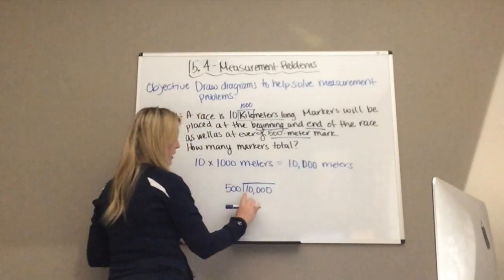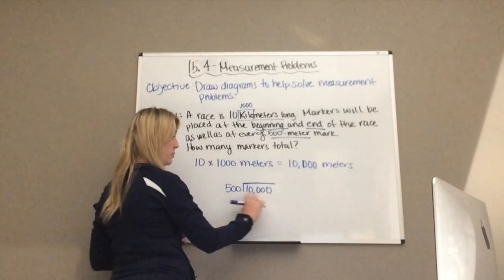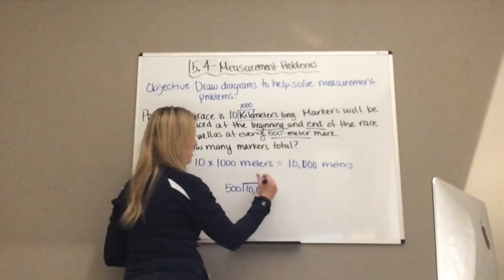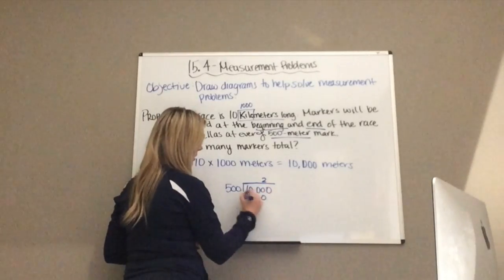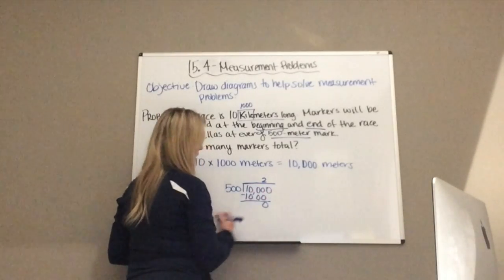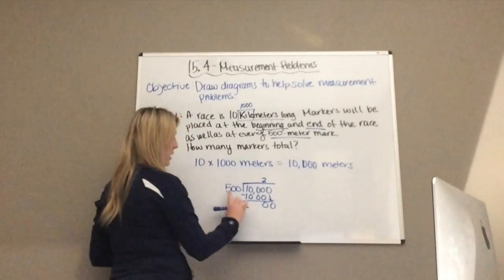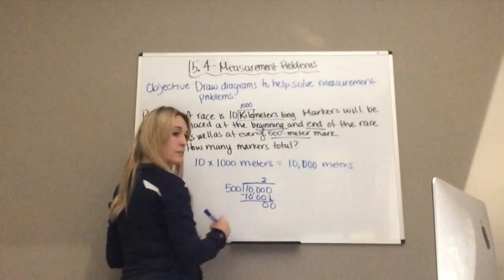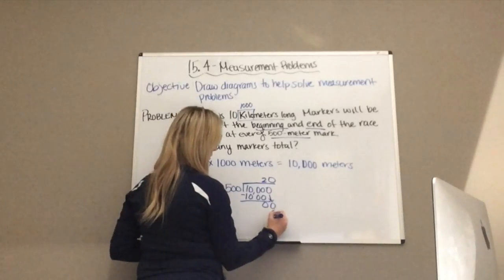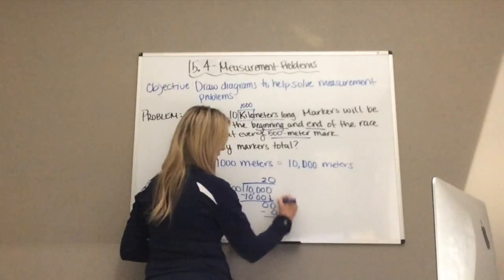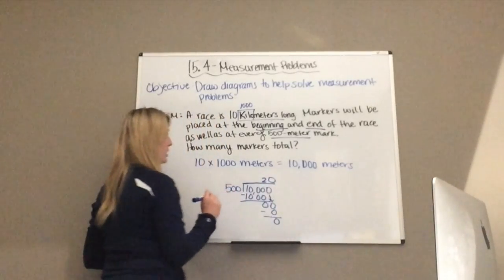Well, 5 does not fit into 1, or 10, or 100, but it does fit into 1,000. 500 fits into 1,000 two times. I subtract and I get zero. I bring down the second zero. How many times does 500 fit into double zero? Zero times. I subtract. I have nothing else to bring down and no remainder. So the answer is 20.